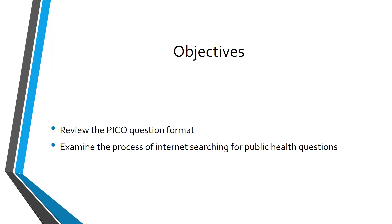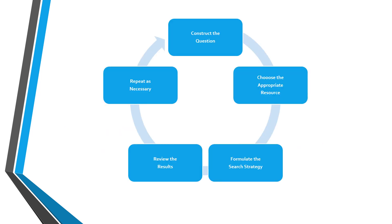Our objectives for Module 1 of this section are to review the PICO format and examine the process of internet searching for public health questions. Remember that searching can be a cyclical process. We start with a question, select a resource to search, then formulate and conduct our search. Based on our results, we may have to circle back and reframe our question and/or try other resources in order to move forward.